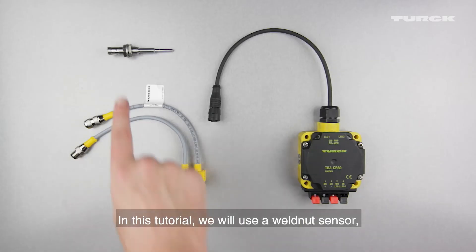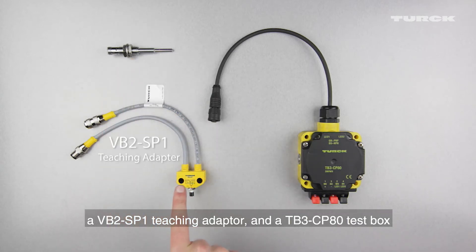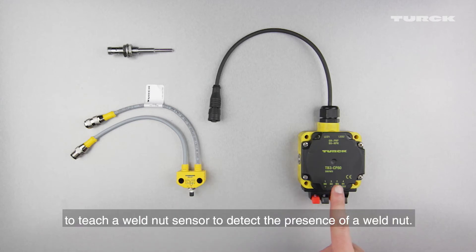In this tutorial, we will use a weld nut sensor, a VB2-SP1 teaching adapter, and a TB3-CP80 test box to teach a weld nut sensor to detect the presence of a weld nut.